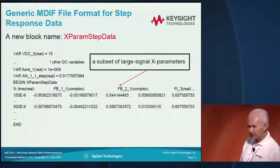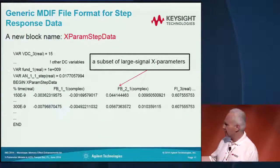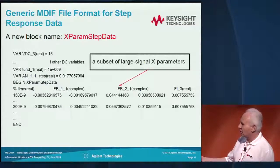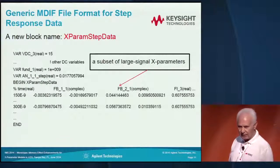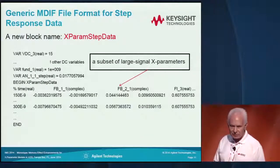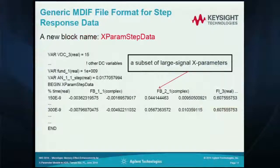What is new here is that the innermost independent variable is time, so for each time point the data is calculated. Also, we don't need all the X parameters — particularly, we don't need any small signal X parameters. We only use a subset of large signal X parameters, and that is sufficient.